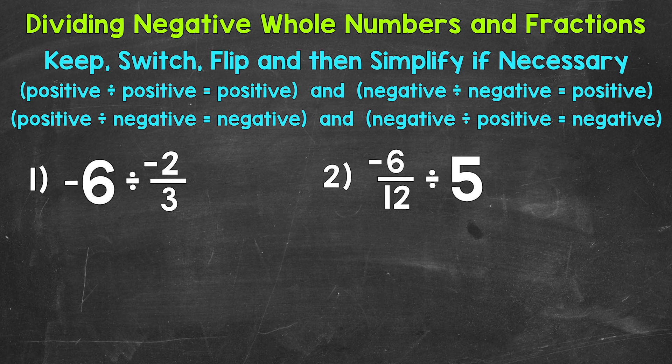Same signs — meaning positive divided by positive, or negative divided by negative — will give us a positive result. Different signs — meaning positive divided by negative, or negative divided by positive — will give us a negative result. Let's jump into our examples.